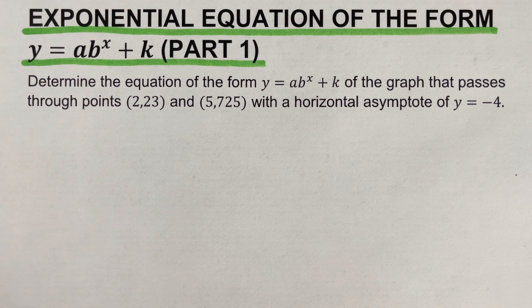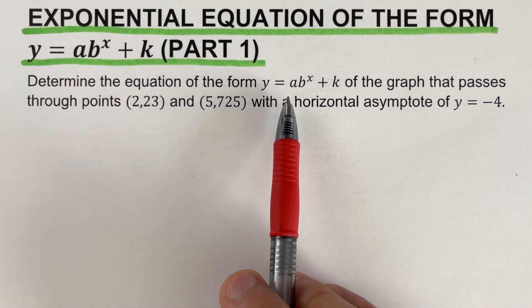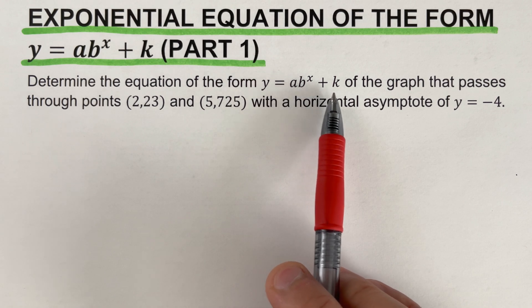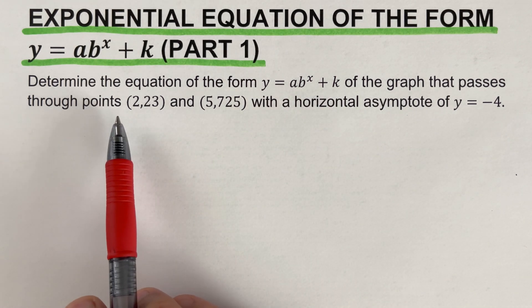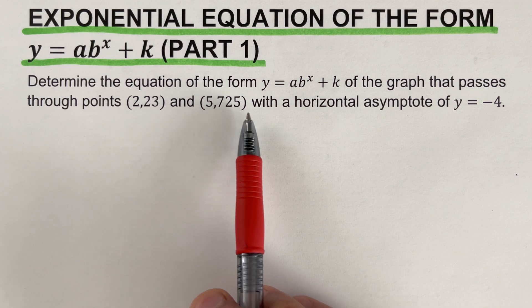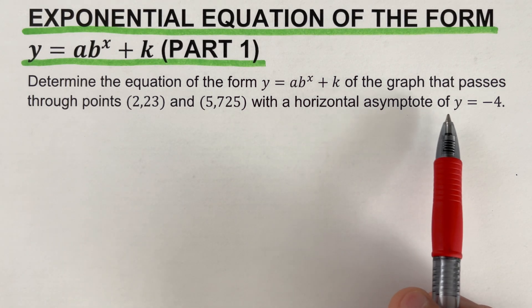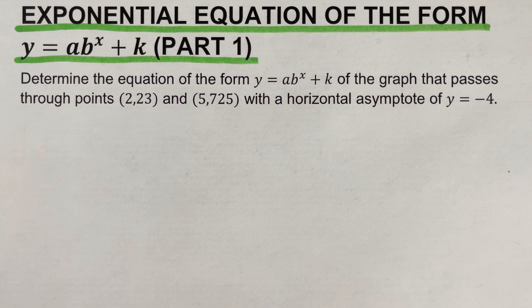Let's go over the problem: determine the equation of the form y equals a·b raised to the power x plus k of the graph that passes through the points (2, 23) and (5, 725), with a horizontal asymptote of y equals negative four.